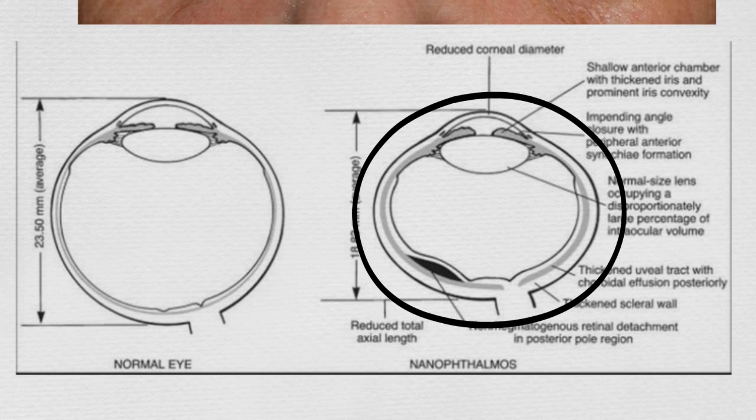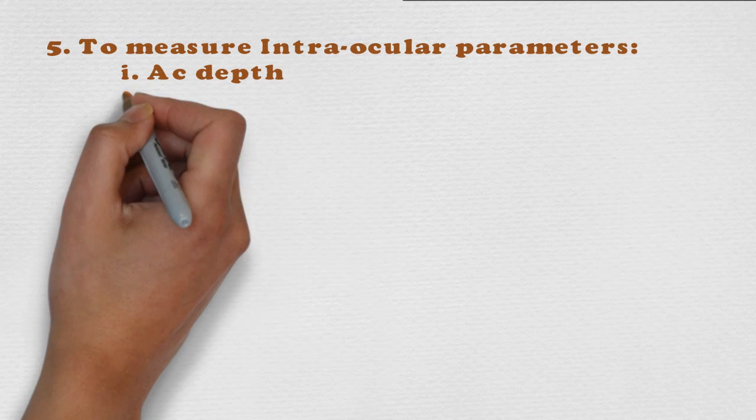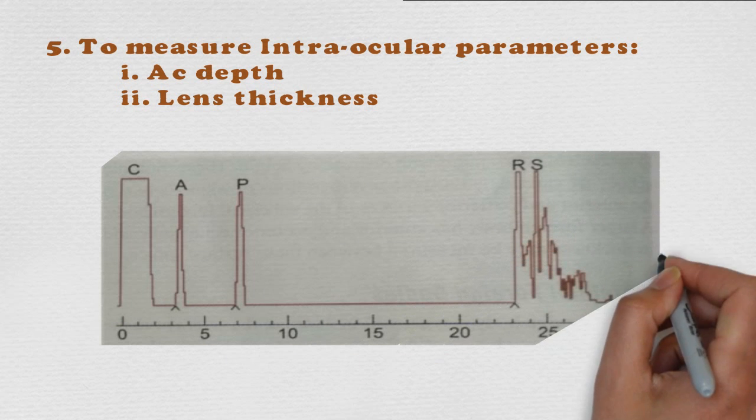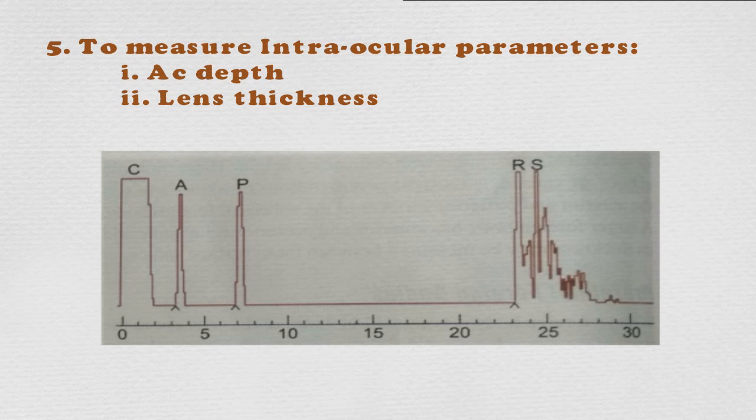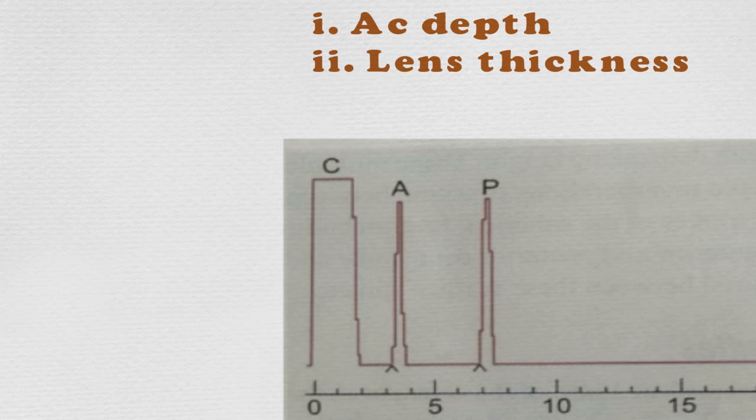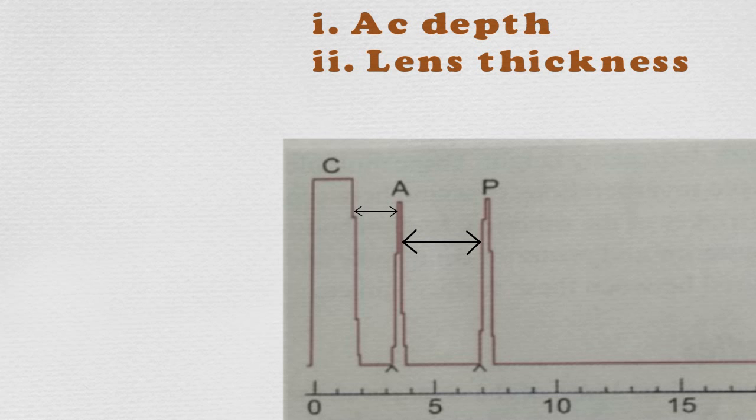And the fifth example of biometry is to measure intraocular parameters like AC depth and lens thickness. In biometry readings it produces five spikes, and from those spikes we are able to measure the AC depth and lens thickness. This is the anterior chamber depth, distance between the corneal spikes and the anterior lens surface spike. And this is the lens thickness, distance between the anterior lens surface and posterior lens surface.